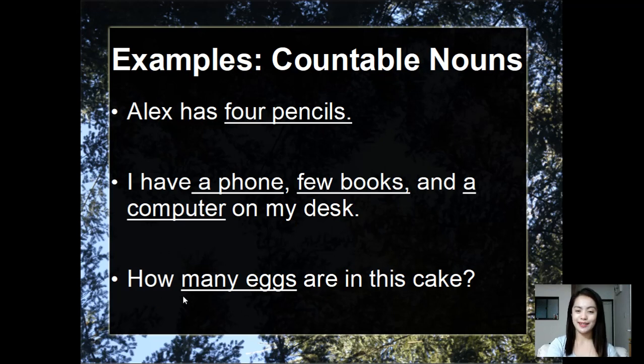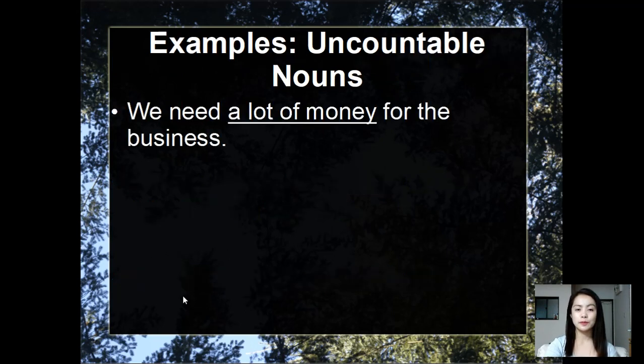Now let's move on to the examples for uncountable nouns. Take a look at this sentence: we need a lot of money for the business. Can you spot the uncountable noun? It's the word money. We treat money as an uncountable noun, so we use a lot of to modify it.